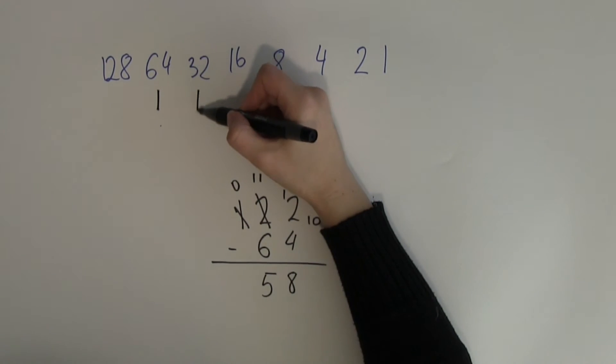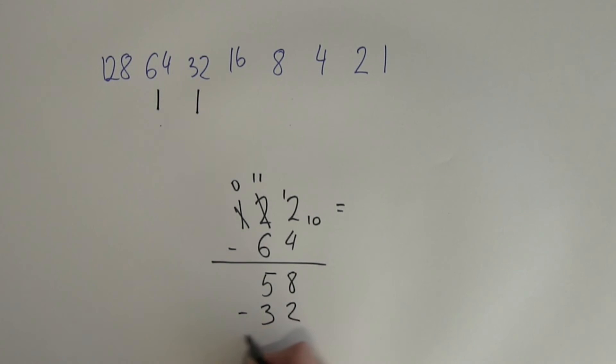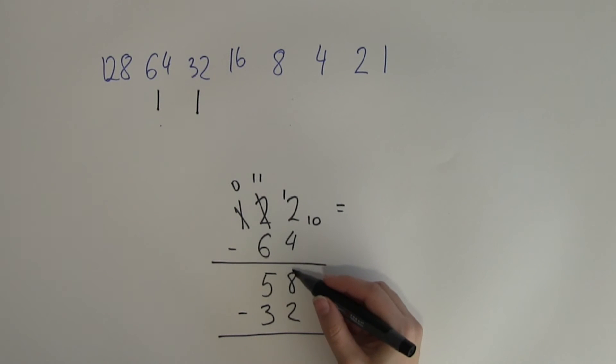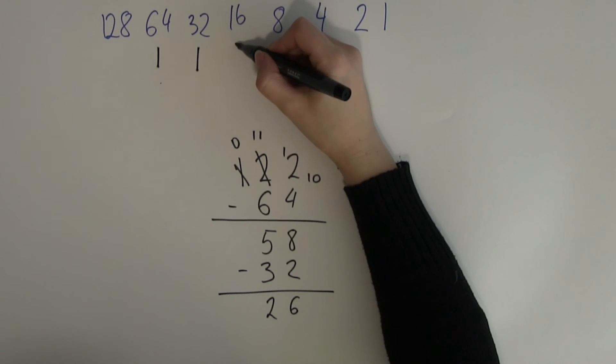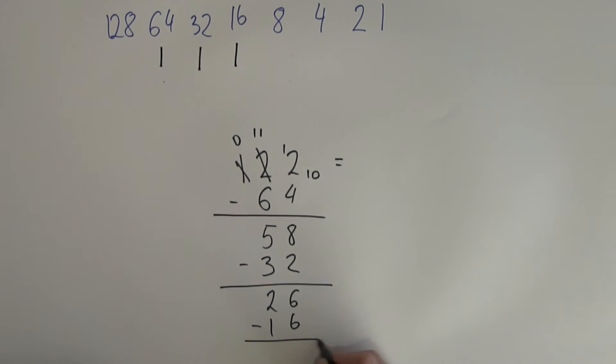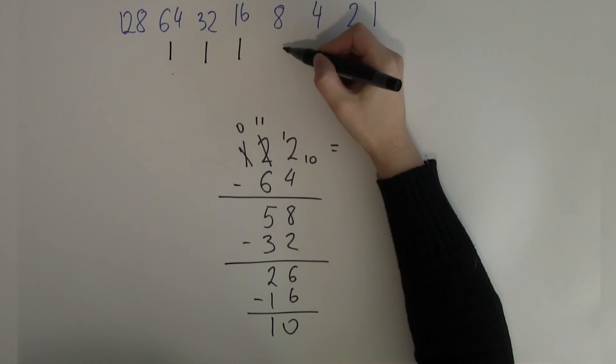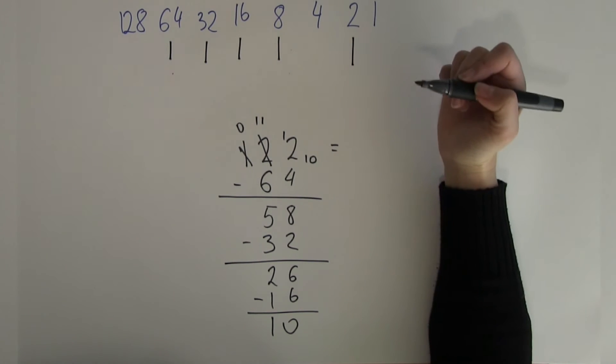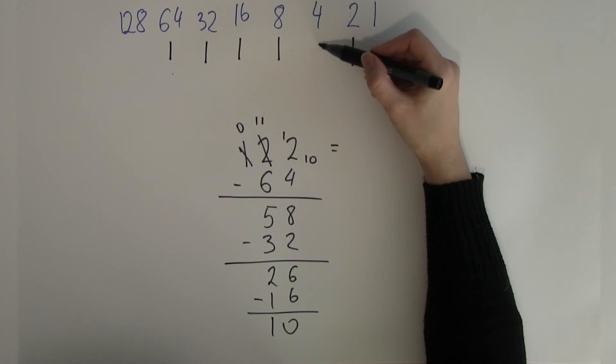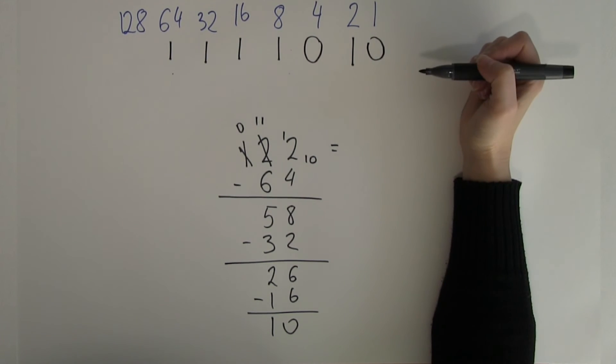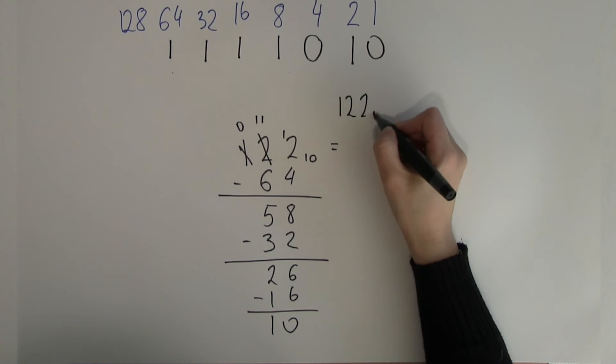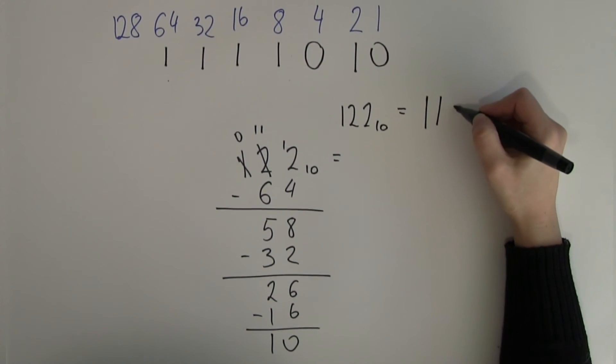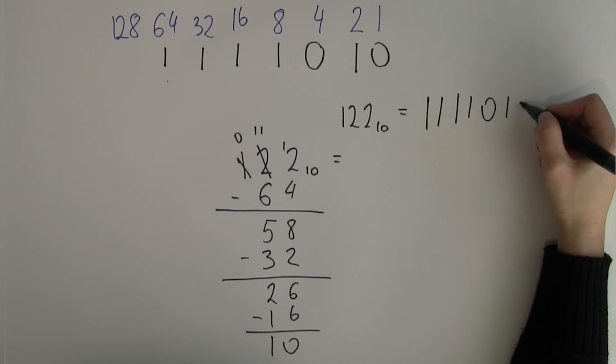58, I can take 32 out from it. The remainder in this case will be 26. 26, I can take a 16 out from it. The remainder is 10 and I remember that 10 can be built up from 8 and 2. There are two place values that I need to fill up with zeros because these are placeholders, the 4 and the 1. So, the binary equivalent of 122 in decimal is 1, 1, 1, 1, 0, 1, 0.